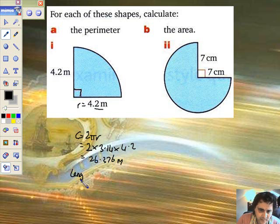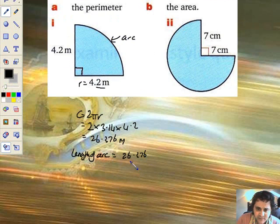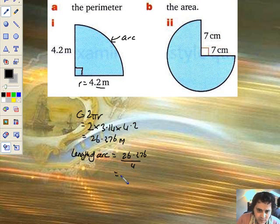Therefore, length of arc. And if you want to show the example of what an arc is, you mean that bit. That's an arc. So it's going to be a quarter of the whole circle. So we're going to go 26.376 divided by 4. And let's get another mark. And we've got 6.594, a little bit bigger, metres. And that is the length of the arc.